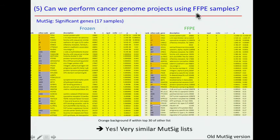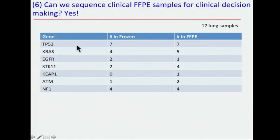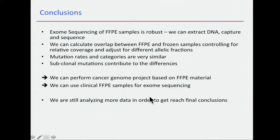Can we use that to run a cancer genome project and run MutSig? We find the same list of significant genes using both the frozen and the FFPE — this is from an older version of MutSig. Can we use it clinically? Yes. When we look at all the known cancer genes in the lung, we find them in both the FFPE and the frozen. So it could be used for clinical sequencing.